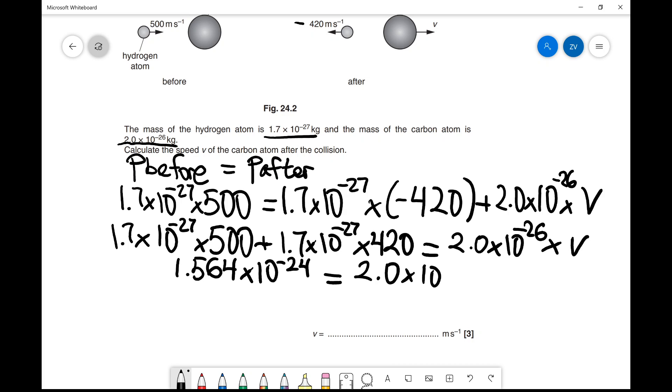Finally, we rearrange for v by dividing: 1.564 × 10^-24 divided by 2.0 × 10^-26. Using a calculator with two significant figures, we get 78 meters per second as our final answer.